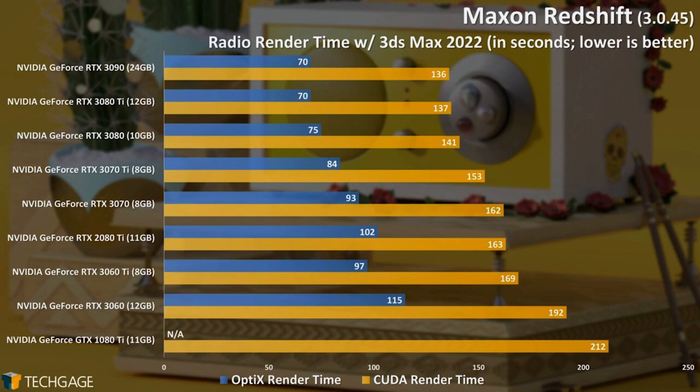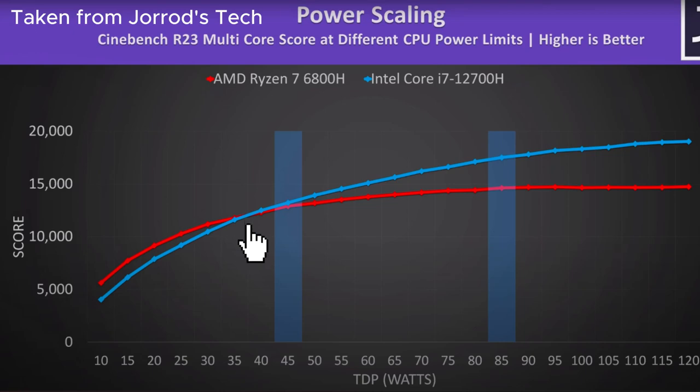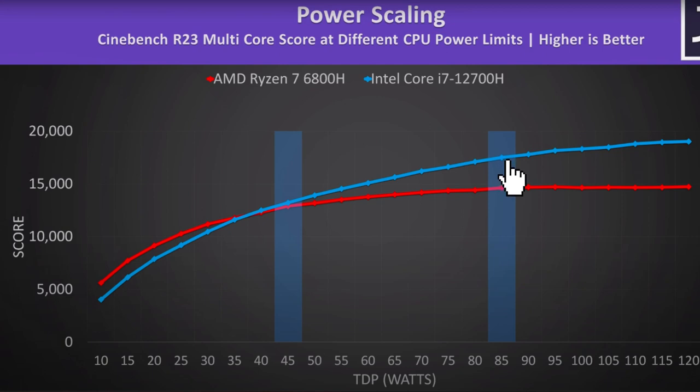Now coming to CPU comparison. There isn't a very huge difference between Intel i7 and Ryzen 7 — up to 45 watts, both perform almost at par. But as you increase the power output of your laptop, Intel i7 starts to surpass Ryzen processors. By the time you reach 80 watts, the performance difference is around 16 to 20% in Intel's favor. So I would recommend going for an Intel i7 processor paired with a 4060 graphics card for the best overall configuration.